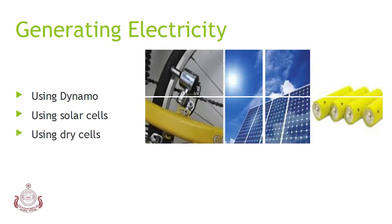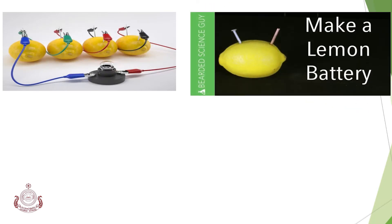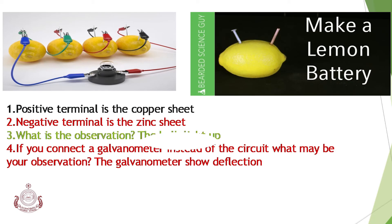We can see them now. In your textbook, there is an activity showing how electricity is produced using a lemon fruit. Here we use a copper sheet as the positive terminal and a zinc sheet as the negative terminal. The observation is that the bulb lights up.